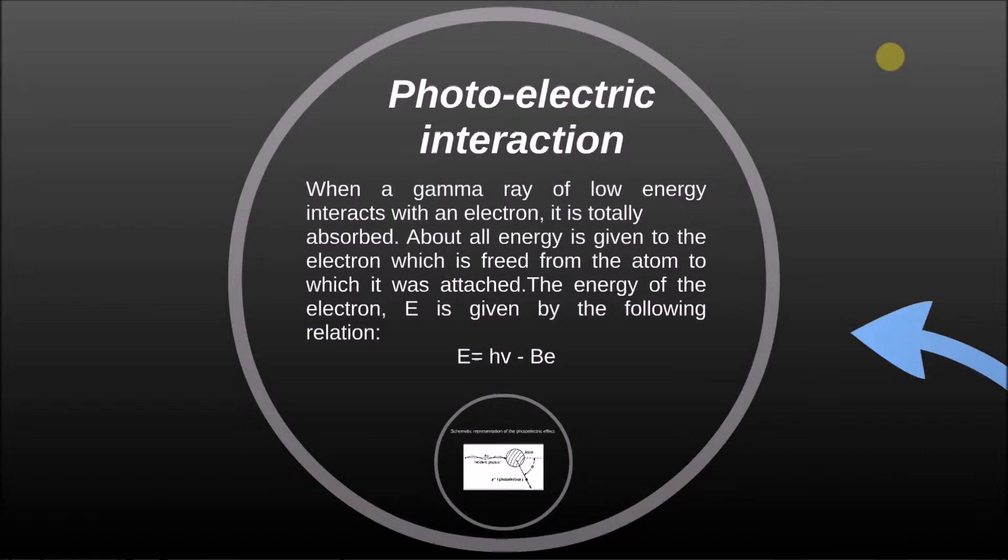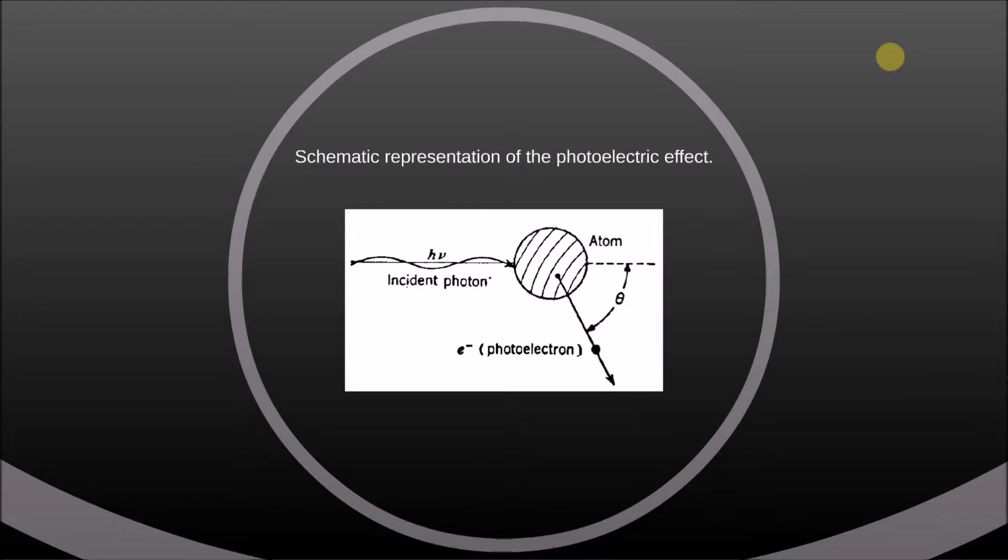The energy of the electron E is given by the following relation. Schematic representation of the photoelectric effect is shown on this picture.